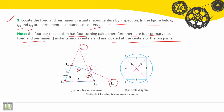Now, the instantaneous center of rotation i(1,3) can be found at the intersection between the straight line through i(1,4) and i(3,4), and the straight line through i(1,2) and i(2,3).